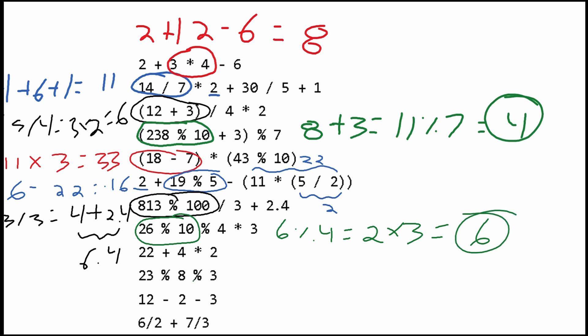For the next one, we have 4 times 2, which is 8, being added to 22, giving us 30. Next, we have 23 modulus 8. We have 8 times 2, which is 16, and then 23 minus 16 is going to be 7.